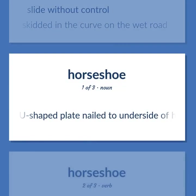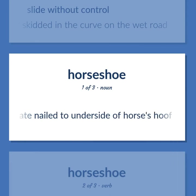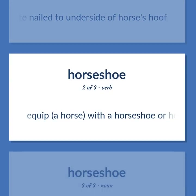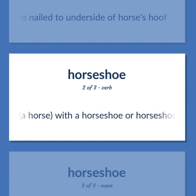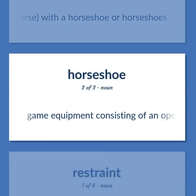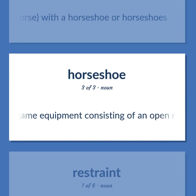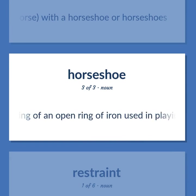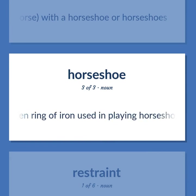Horseshoe: A U-shaped plate nailed to the underside of a horse's hoof. To equip a horse with a horseshoe or horseshoes. Game equipment: an open ring of iron used in playing horseshoes.